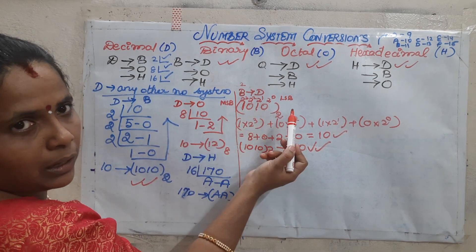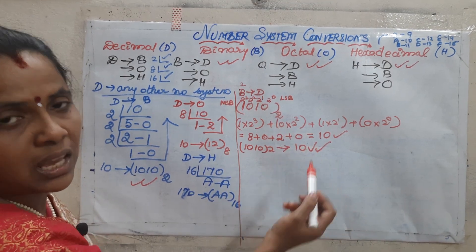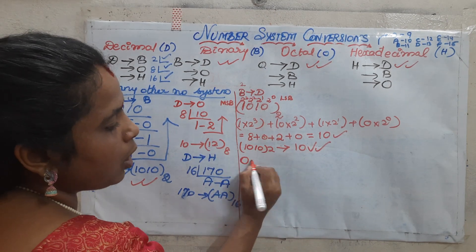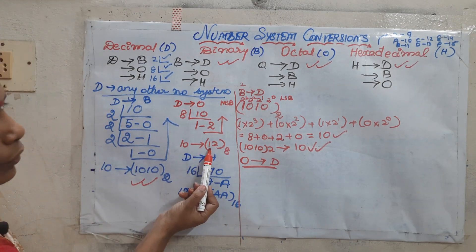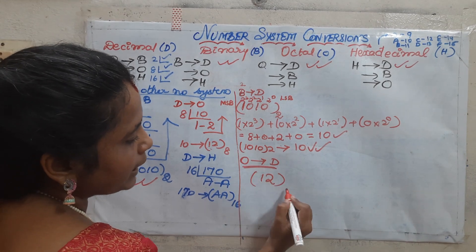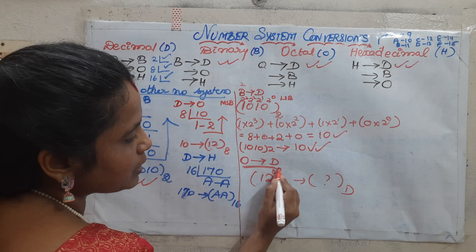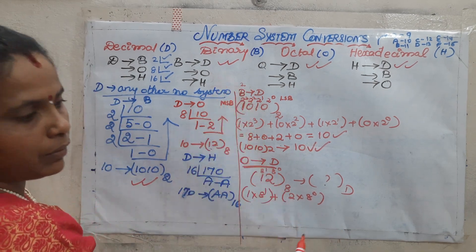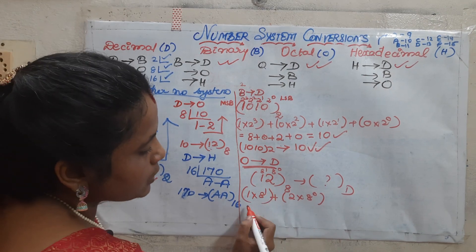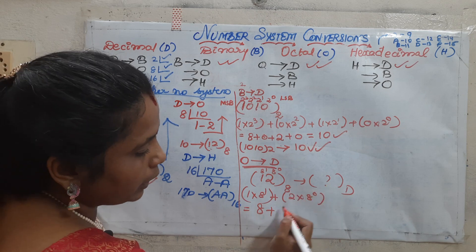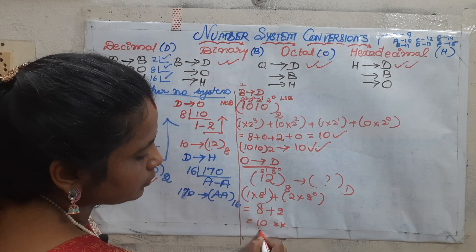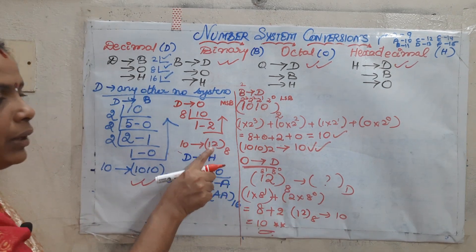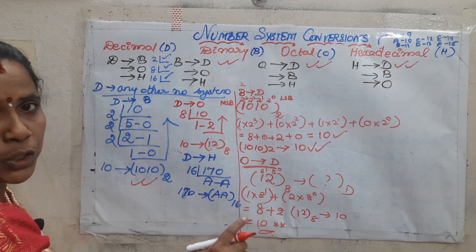Similarly for octal to decimal: multiply in terms of powers of 8; for hexadecimal to decimal, multiply in terms of powers of 16. Now octal to decimal: our octal result was 12 base 8. So: 1×8¹ + 2×8⁰ = 8 + 2 = 10. We are getting the same result, so 12 base 8 equals 10.